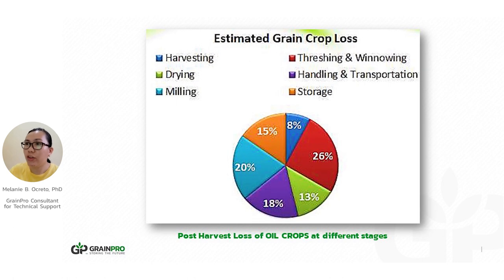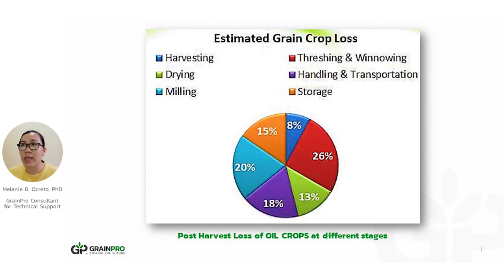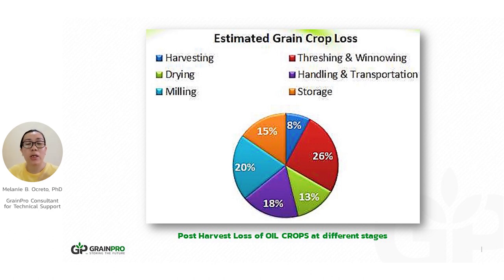We also have a pie chart showing the post-harvest loss of oil crops at different stages. Oil crops are more sensitive than other grains. With storage, it's about 15%. With drying, it's about 13%. Handling and transportation is 18%. How do we prevent such losses? It's quite a big number, and we want to prevent these losses in oil crops and other cereals and commodities.